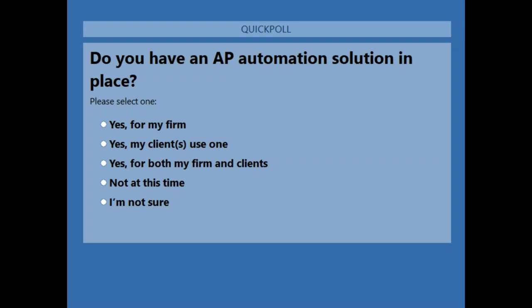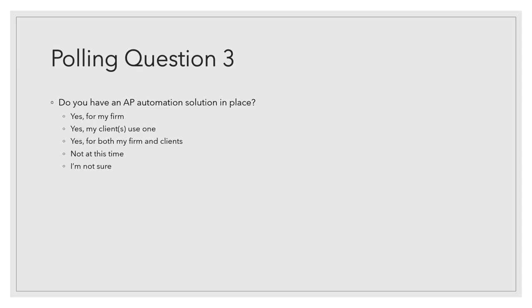Thank you for voting so quickly. Nineteen percent of you said yes — you've got something in place for your AP. But 46% of you said not at this time, you don't have anything. I'm really glad to be able to share the things I do before implementing automation, so you can see you've got to have clear processes before you pull in some technology.